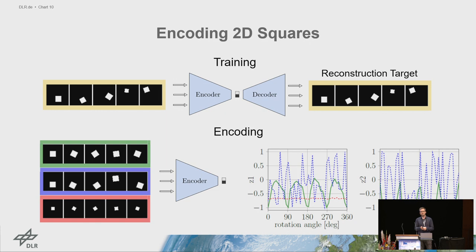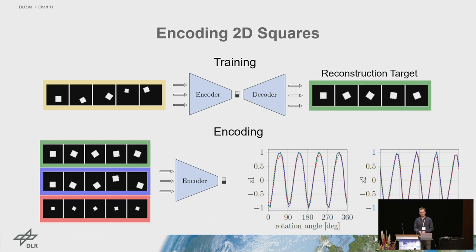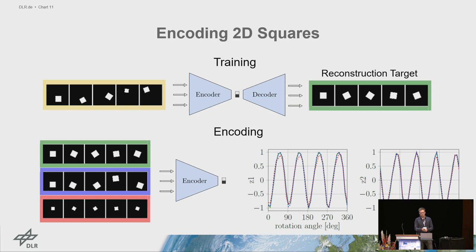The solution is to still scale and translate the input squares, but keep the reconstruction target unscaled and centered. This makes the encoding invariant to translation and scale. The latent dimensions then resemble continuous sine and cosine functions, specifically encoding an implicit orientation. Notice the fourfold frequency of the sine and cosine functions, which is due to the two symmetry axes of the square.